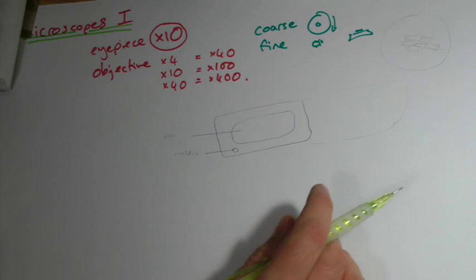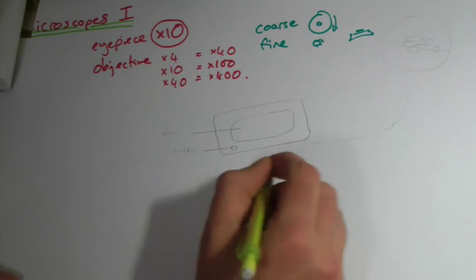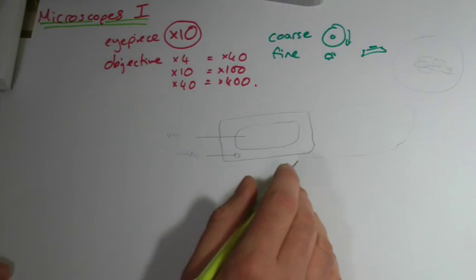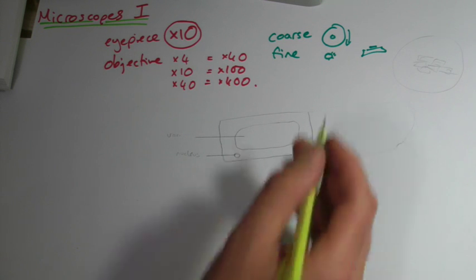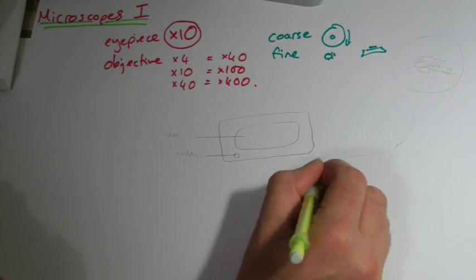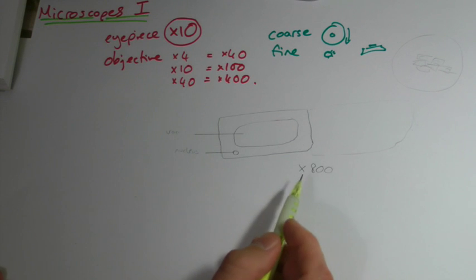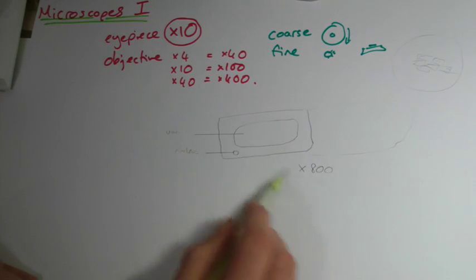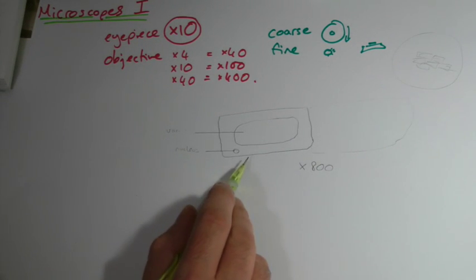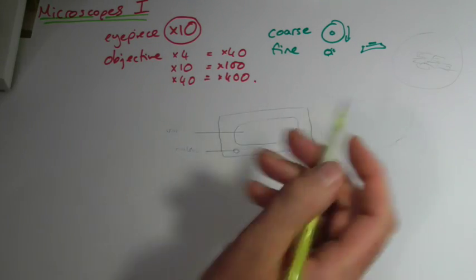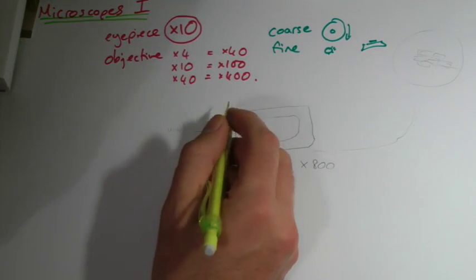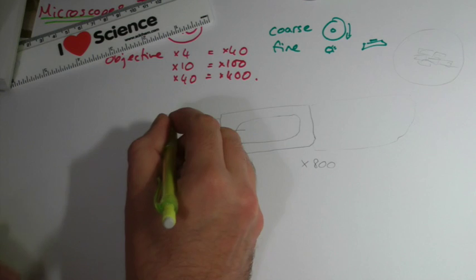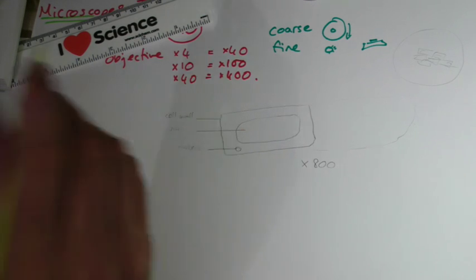You would also be expected to include on this the magnification, but I'm not going to write the magnification on. In fact, I will, yes. Why don't I say? So I'm just going to imagine for a second that this is on a times 800 magnification. And I would say what it is, red onion cell, times 800 magnification. There, there's my drawing. Let's put the cell wall on for completeness. There we go. Cell wall.